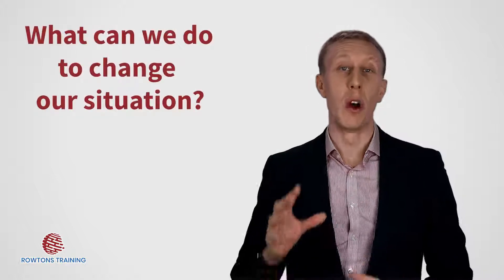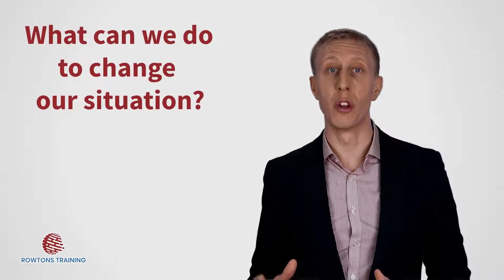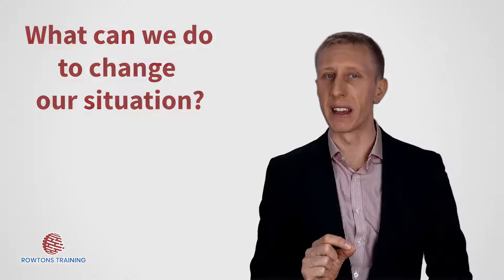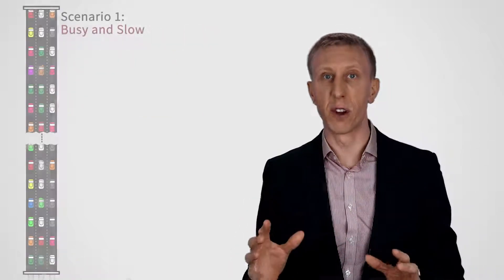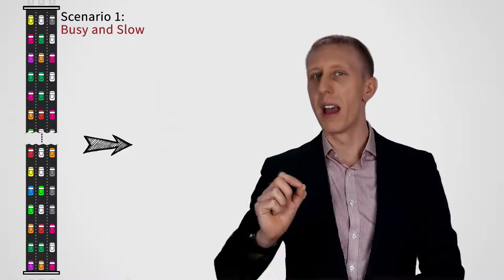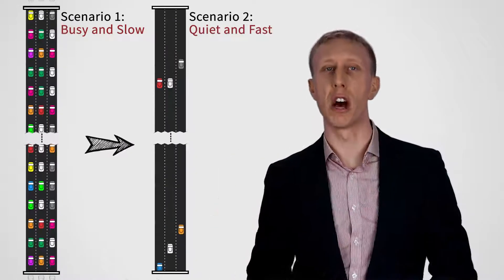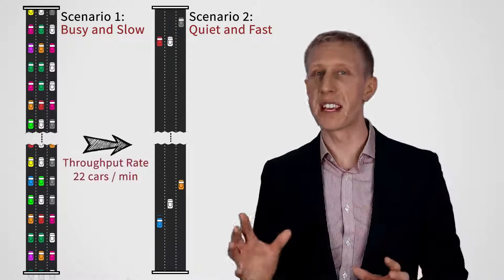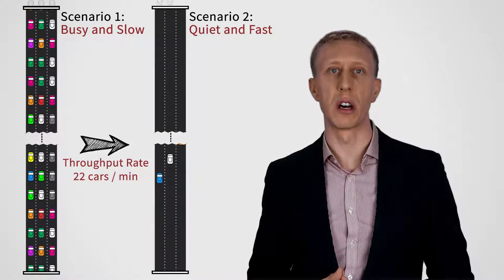Which you probably knew and is why you're here watching me talk about hypothetical traffic. So what could our toll road owner do to get from having a road permanently full of traffic and angry customers with huge lead times to having the fast road scenario, both with the same throughput rate of 22 cars a minute?